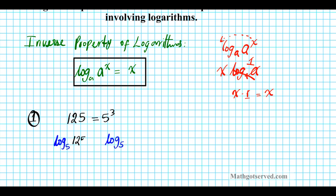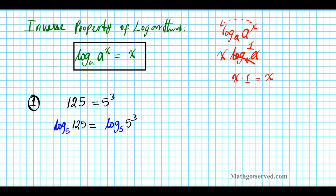So we have log base 5 of 125 equals log base 5 of 5 to the third. Next we're going to simplify the right side using the inverse property of logarithms. If you take a look at log base 5 of 5 to the third, it simplifies into 3, because log base 5 and 5 are inverses — they cancel out and you're left with 3. So your final answer is log base 5 of 125 is equal to 3.